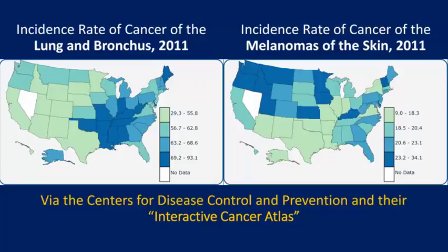Looking at the United States, the map on the left shows incidences of lung or bronchus cancer — essentially lung cancer. We can see it's endemic where we see higher rates along the Ohio and Mississippi River. Indiana, Kentucky, Tennessee show much darker blues, illustrating higher rates of cancer. So we can say that is endemic to that geographic area from Indiana down to the Gulf.